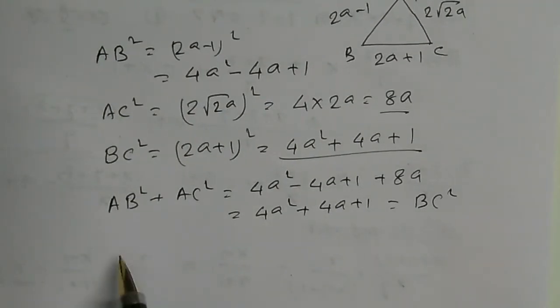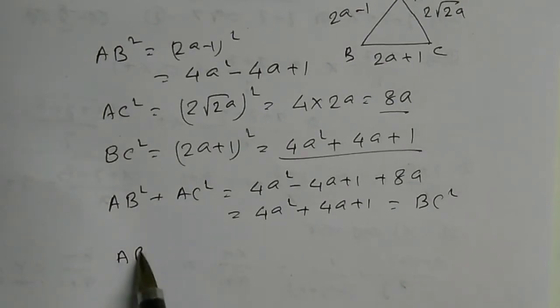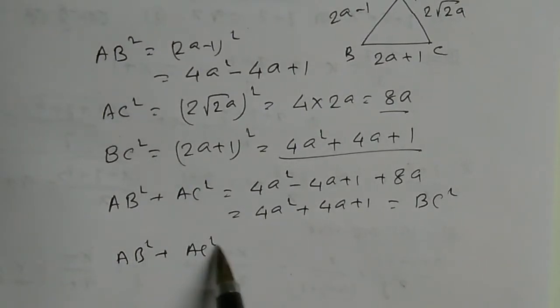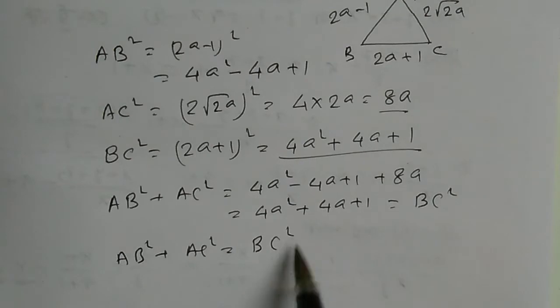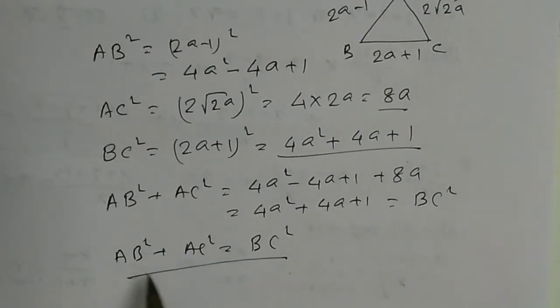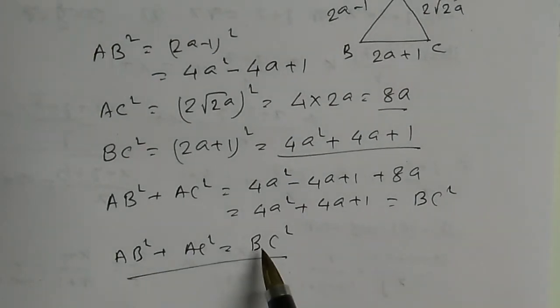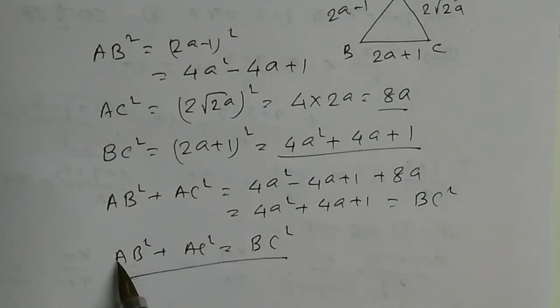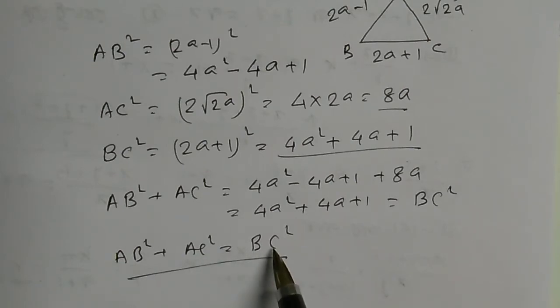Hence, ultimately we get AB square plus AC square equal to BC square. Here we note that the square of sum of the square of two sides equals the square of third side.